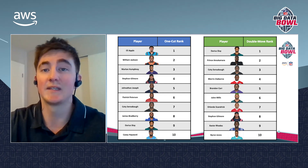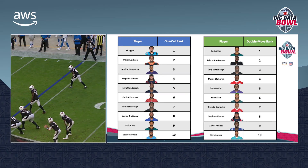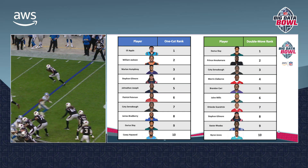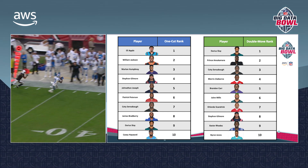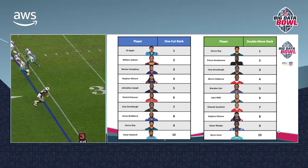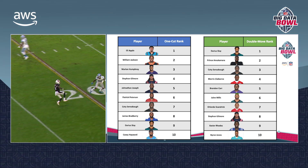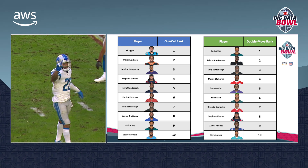To the left you'll see the rankings for one-cut routes — this is 2018 data covering all hitches, slants, and comeback routes. It passes the eye test in my opinion: you can see Stephon Gilmore, Patrick Peterson, and Darius Slay in there. On the right you can see the rankings on double moves, which also includes Darius Slay and Stephon Gilmore — so it passes the eye test as well.